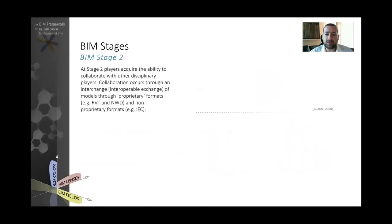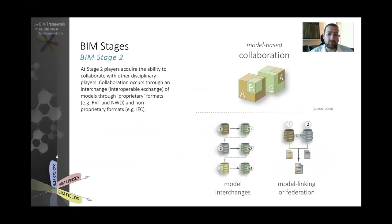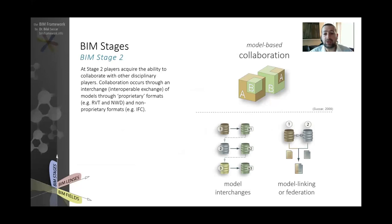When we go to BIM Stage 2 — model-based collaboration — we are really entering into the very interesting implementations of BIM. At model-based collaboration, there are still limitations to what companies can do, but let's define it. Model-based collaboration is no longer just a single company or discipline using object-based software to generate deliverables. Now it is more than one discipline or more than one company exchanging models or parts of models in order to generate their typical deliverables and additional deliverables.